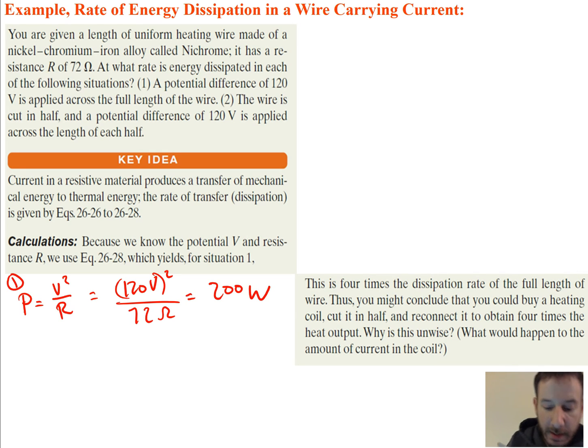So now we want to look at the second situation where we cut the wire in half and then we run the potential difference through each length or each half of the wire. So we'll just call this P prime, and it's going to be the same voltage. We're running the same voltage difference across, but this time the resistance is going to be cut in half because I only have half the amount of wire. So if it's 72 ohms for the full length of wire, then half of that wire is only going to be half of that, which is 36. So this is just going to be 36 ohms, which is equal to 400 watts.